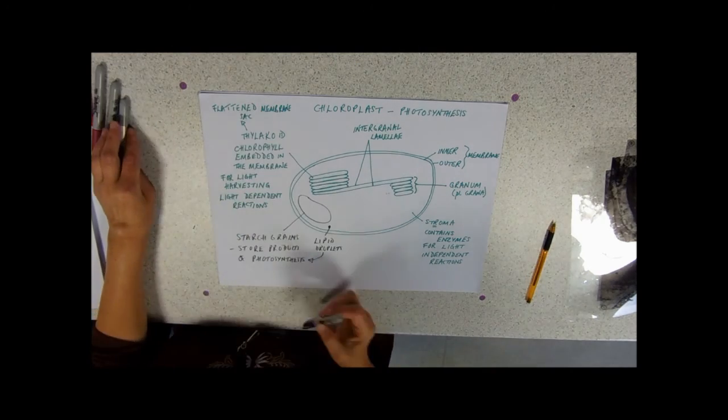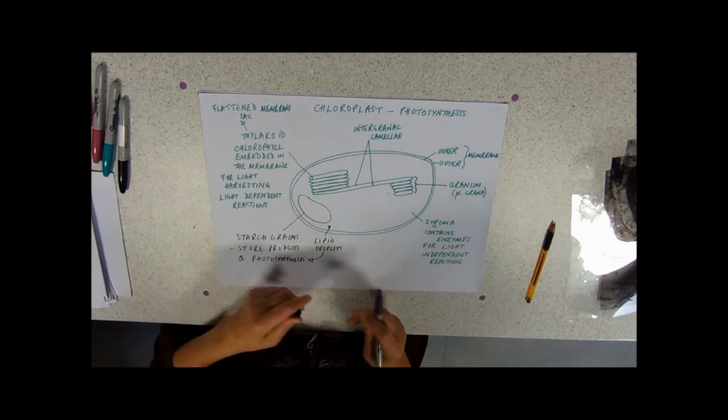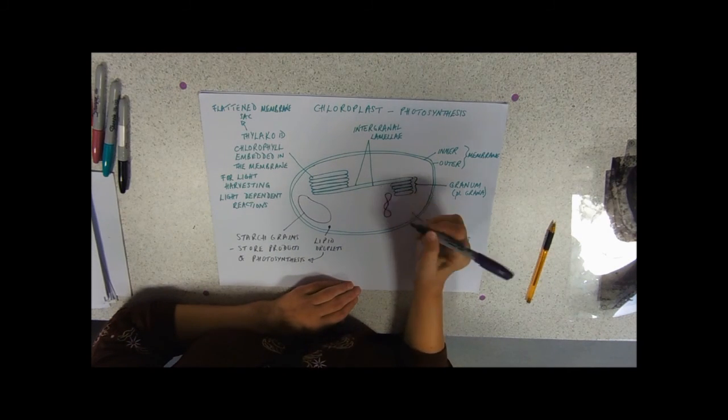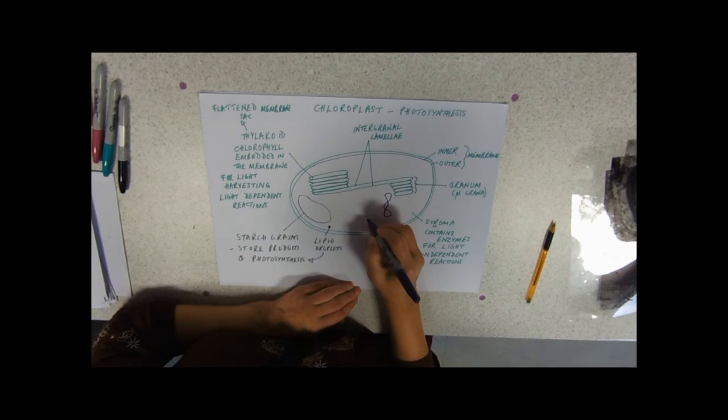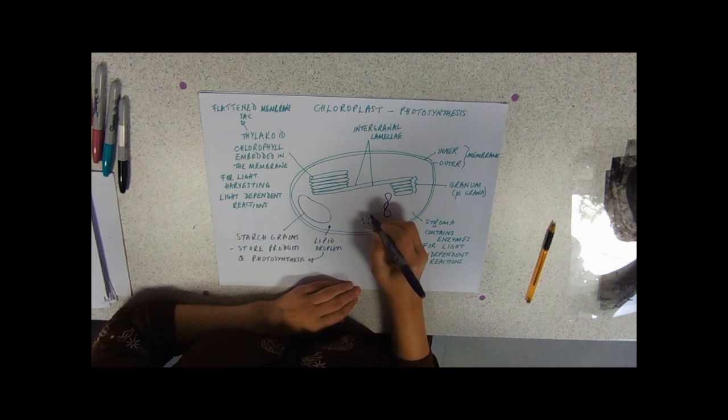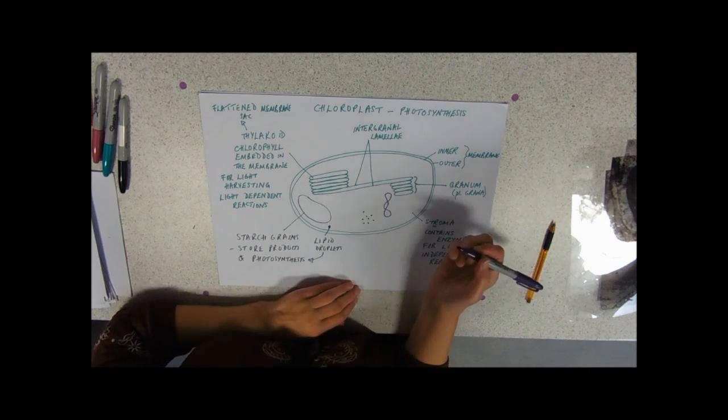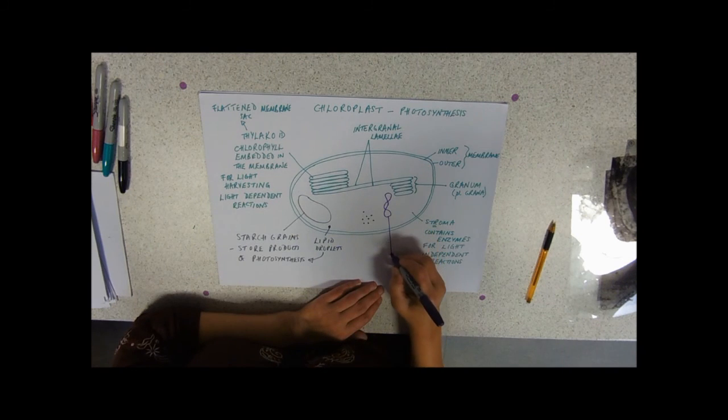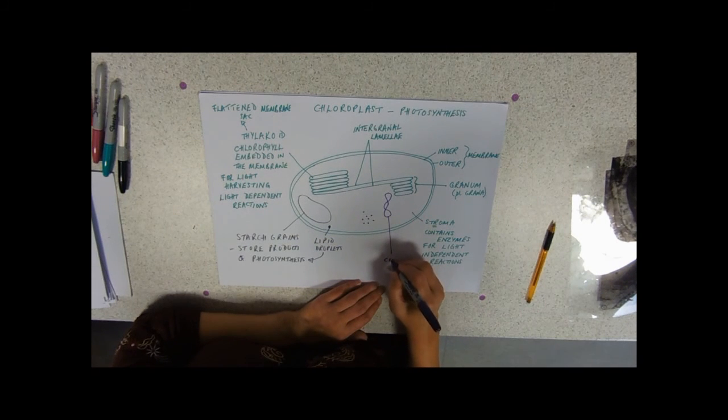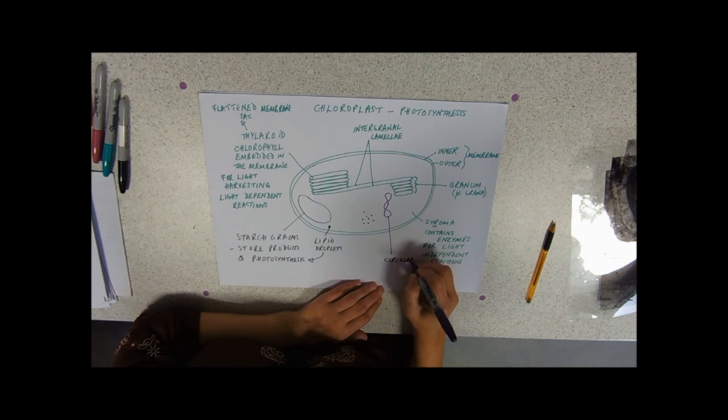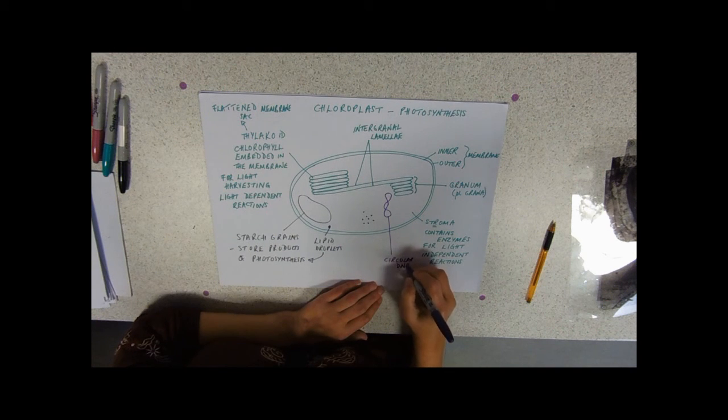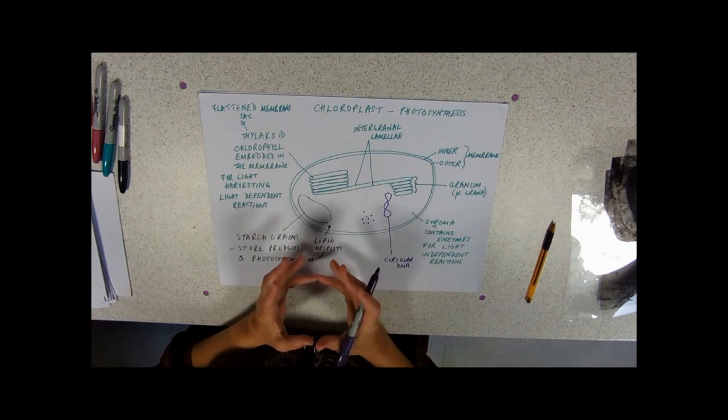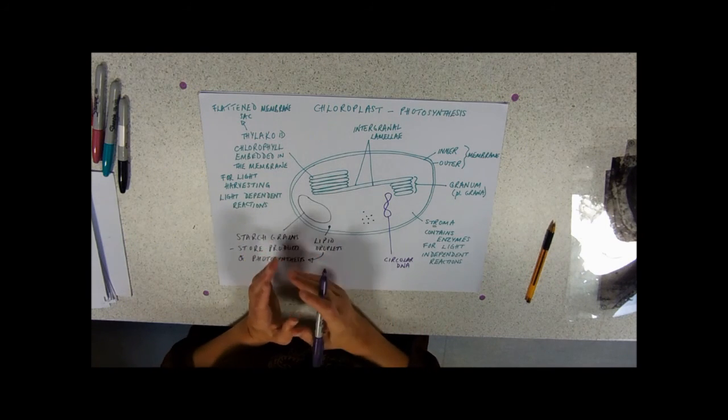And finally, these are very similar to mitochondrion in that they also have a circular loop of DNA and these small ribosomes. So again, in terms of what scientists think how plants gained their chloroplasts in the first place is this endosymbiotic theory that they were engulfed and it was like, oh yeah, they do something useful. They can do photosynthesis and make sugar. That's fantastic.